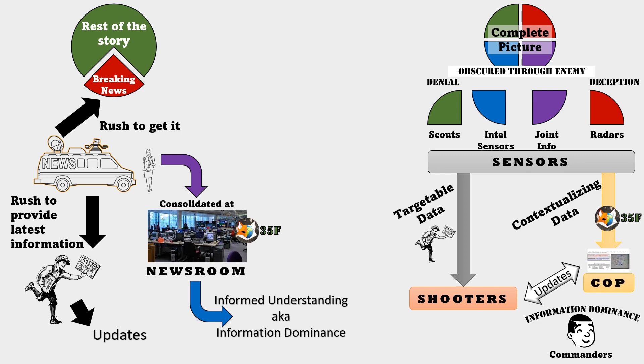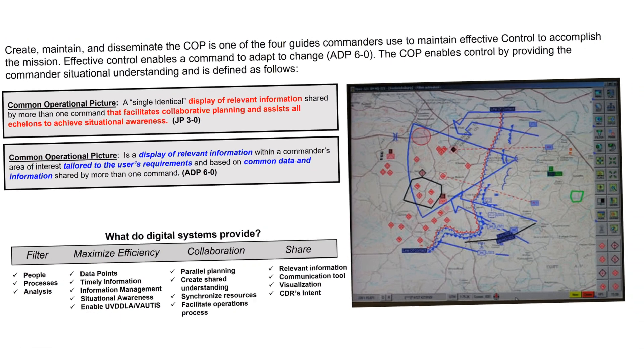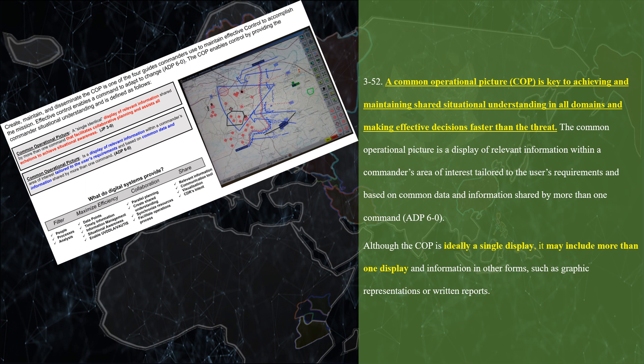The Common Operational Ground Picture, or COP. The common operational picture is a display of relevant information within a commander's area of interest, tailored to user requirements and based on common data and information shared by more than one commander.